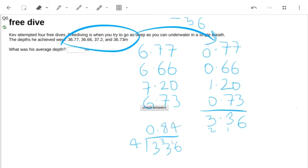It gives me 0.84 for my average. And then I'm going to add 36 back on at the end. So my answer is 36.84.